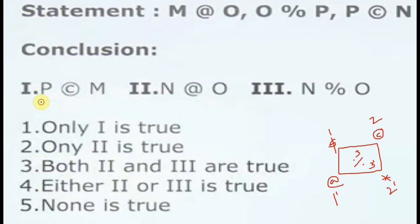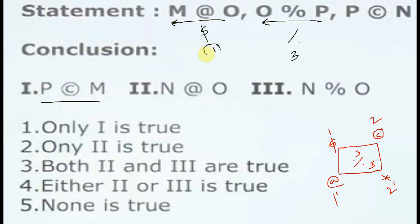For the first conclusion P-copyright-M: here is P and here is M — they work in separate directions. The symbol change is determined: percentage symbol is number 3, and dollar is number 1. So 1 and 3 give another conclusion. The conclusion is dollar-1 and P-Q-M, but here copyright cancels it. Then N-Q-O is checked.